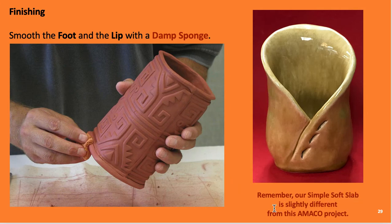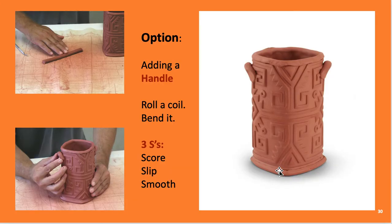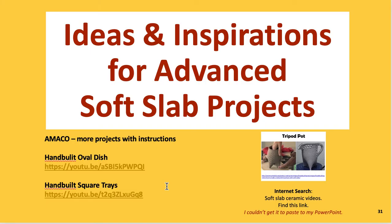Smooth the foot and lip with a damp sponge to make it look refined and finished. Our simple soft slab is slightly different from the AMCO version — the foot can be cut totally away so it just angles underneath, or you can leave a little ridge like a foot rim; either is fine. Optionally, you can add little handles made from a coil bent in half and blended onto the sides. Remember the three S's: score, slip, and smooth. That was it for the first project.